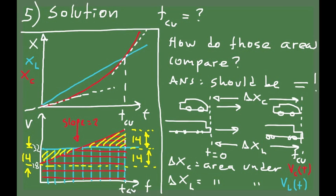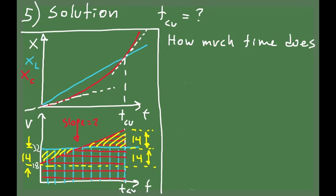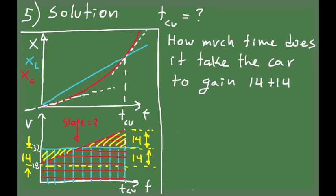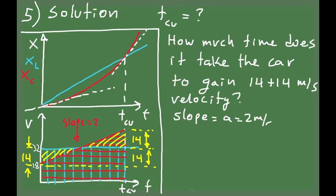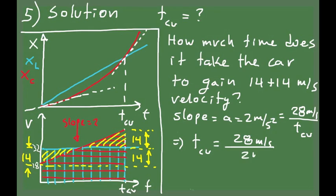That gives a total increase in velocity for the car of 14 plus 14 equals 28 meters per second. At catch-up time, the velocity of the car should be 28 meters per second faster than its initial velocity. So the question of how much is the catch-up time becomes: how much time does it take the car to increase its velocity by 28 meters per second? Since the acceleration is 2 meters per second squared, and the slope of the red line is 2 m/s², with a rise of 28 and a run of t catch-up, t catch-up equals 28 divided by 2, which gives 14 seconds.